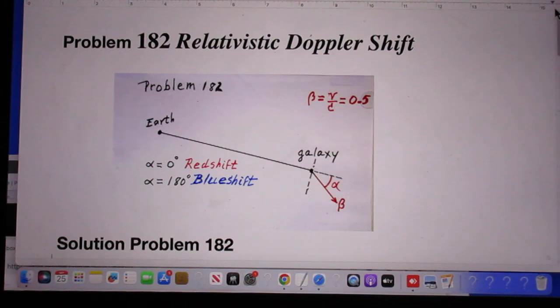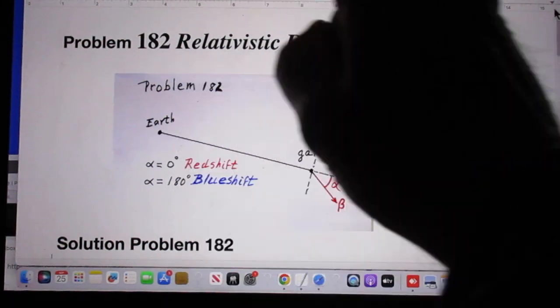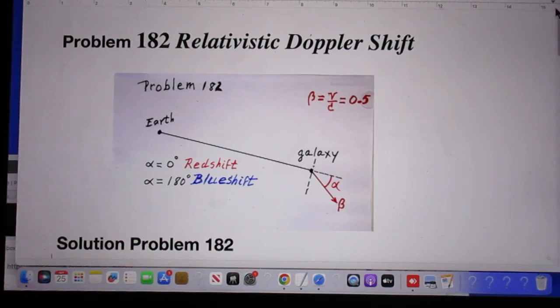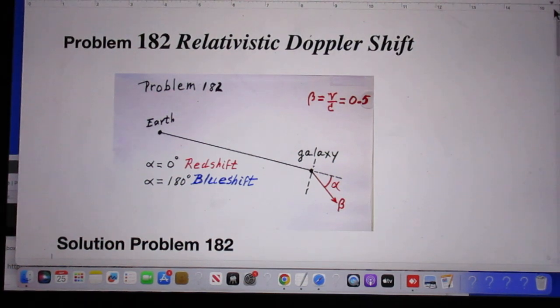I promised that I would publish the solutions to problem 182 today. What was that problem? Here is Earth and here is a galaxy. Someone in that galaxy is sending electromagnetic waves towards Earth.